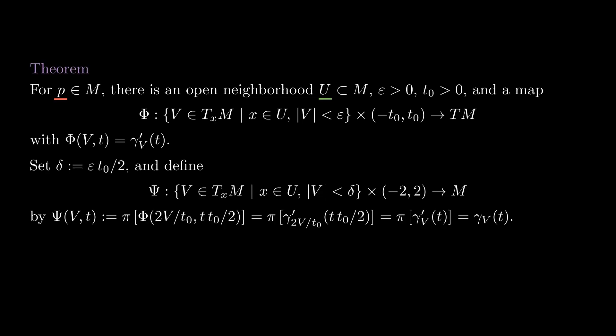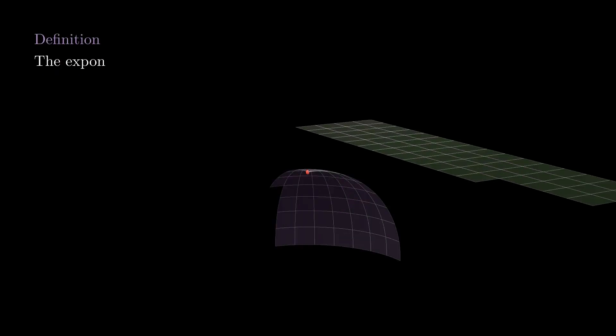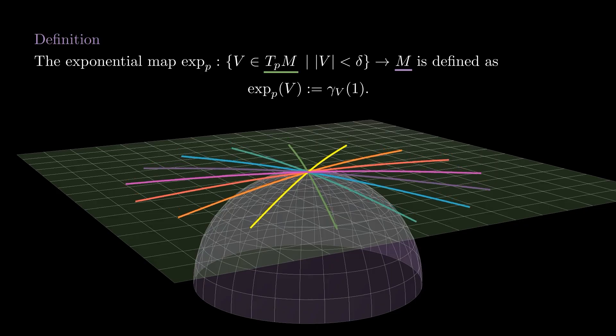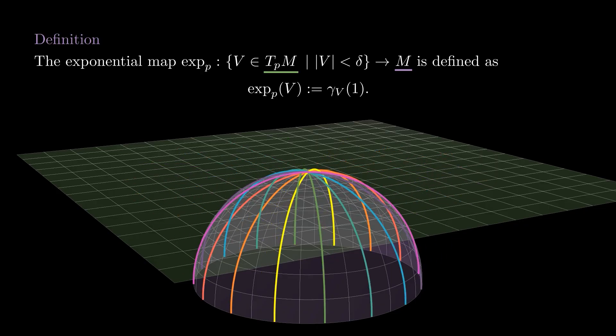We will use this map psi to define the exponential map at p. The exponential map at p is a function from the ball of radius delta in the tangent plane TpM to M, given by the formula gamma v of 1. We know it is smooth because it coincides with psi of v1, which depends smoothly on v. For each line passing through the origin in TpM, the exponential map sends it to the geodesic in M with that same direction.